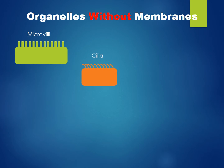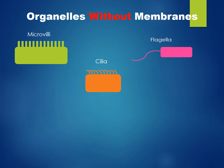Cilia are extensions of the cell membrane that help move materials along the surface of the cell. Flagella is a whip-like structure that causes cell movement. Flagella are not present in all cells; sperm cells utilize flagella to aid in movement throughout the reproductive tract.